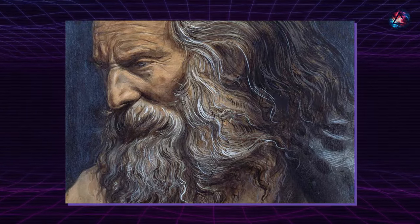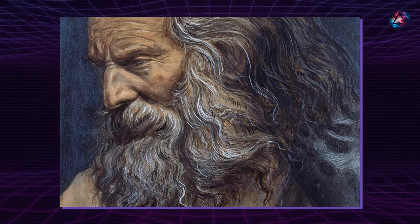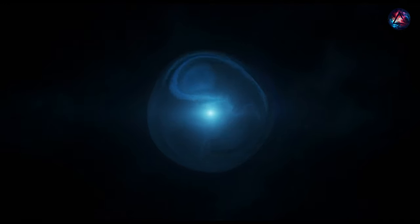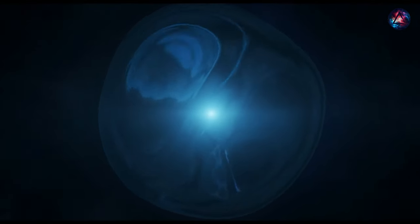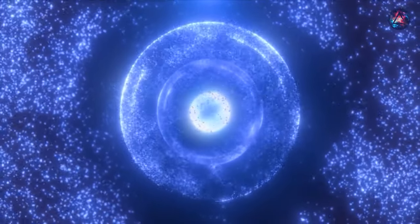Methuselah, named in reference to a biblical patriarch who purportedly lived to the age of 969, making him the longest-lived figure in the Bible, seemed ancient. Given that Methuselah is primarily composed of hydrogen and helium with minimal iron, it suggested that the star must have formed before iron became abundant in the cosmos.